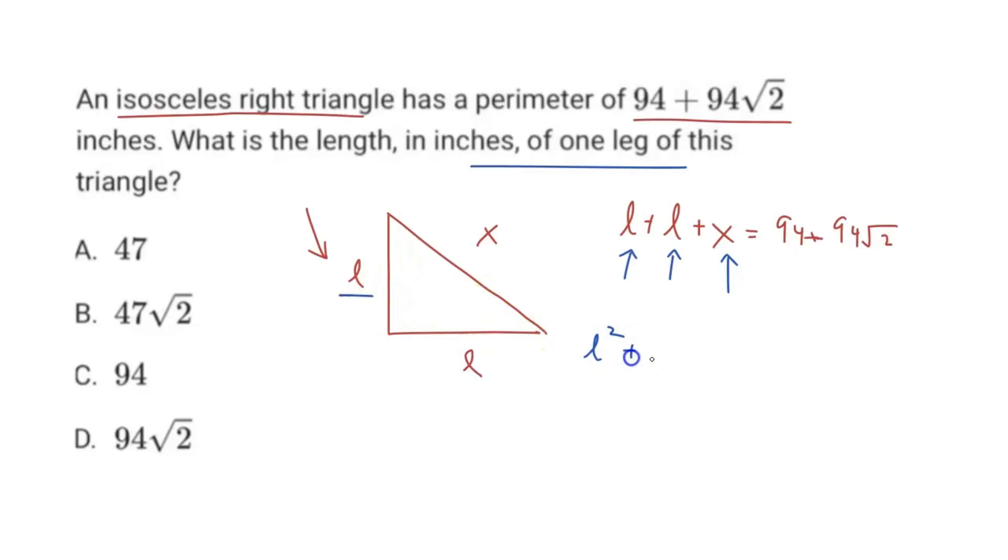So in this case, length squared plus length squared must be equal to x squared. And so this here is just 2 l squared. So let me write 2 l squared equals x squared.